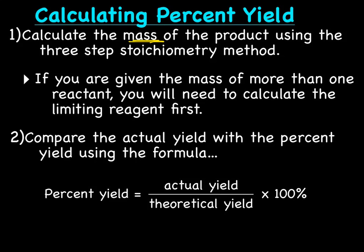If you are given the mass of more than one reactant, you will first need to calculate the limiting reagent to figure out, you know, how much product you can actually make. You know, the most amount of product you can make with the limiting reagent.